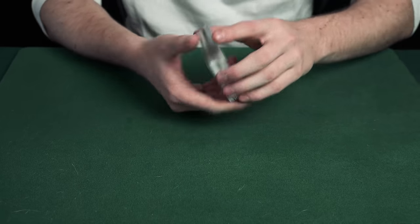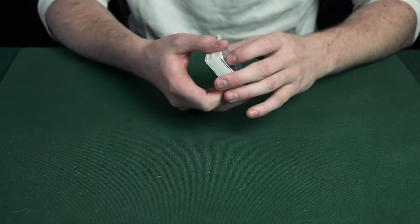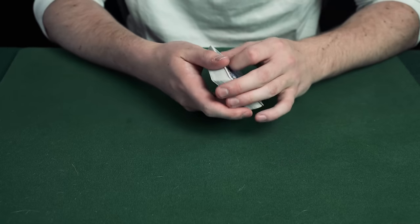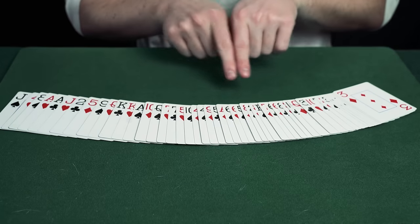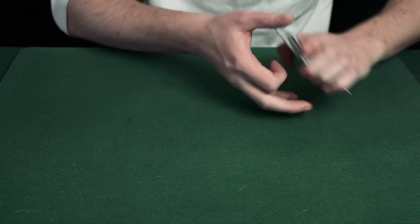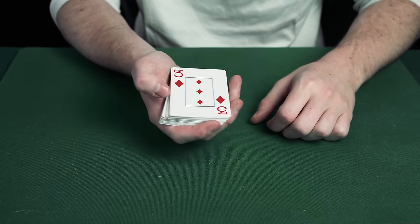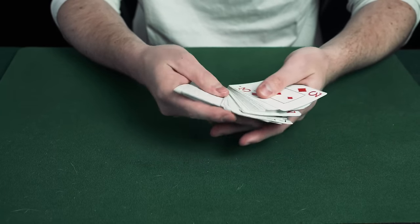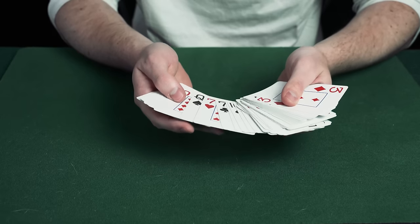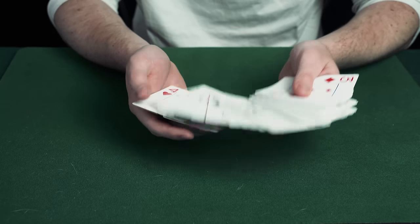To begin the trick you want to show to the spectator that you've got what appears to be just a normal deck of cards. You turn the cards over and of course you can't spread them out like this or they'll see the alternating order. So what you do instead is hold the cards in your hand and using your thumb just push off clumps of cards to the side and this creates the really convincing illusion that the cards in your hand are in no particular order.